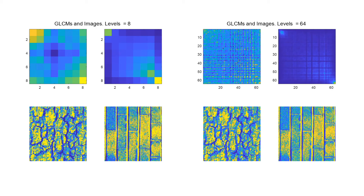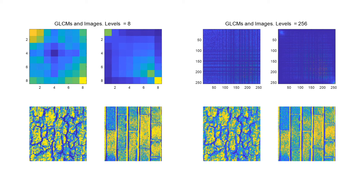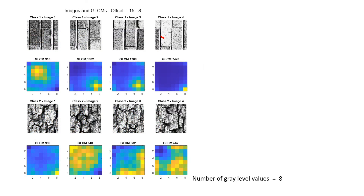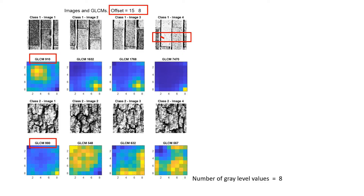Here are different examples for different quantization levels. We can see how the structure of the matrices differ between the different classes. The position operator, which we will refer to from now on as an offset used in this example, was 15-8, and I'm highlighting it in red on the image on the top right so you can have a feeling of the distance of the pixels as well as the direction. On the top of the matrices you will find the maximum count in the matrix itself, that is the number of pixels in the image that comply with the operator that we defined.